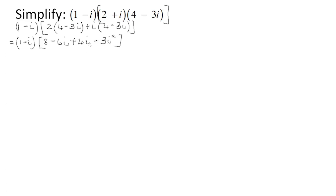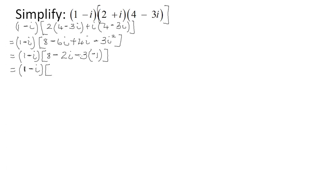Next step: simplify the i parts and immediately substitute i² = −1. We get (1 − i) × [8 − 6i + 4i − 3(−1)]. Combining: −6i + 4i = −2i, and −3 × −1 = +3. Remember the negative rule — a negative times a negative becomes a positive. So inside the square bracket we have: 8 + 3 = 11, giving us (1 − i)(11 − 2i).